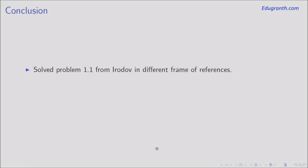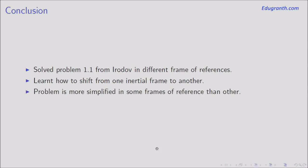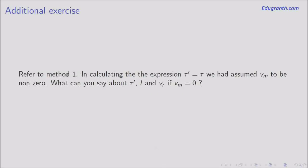As a conclusion, we have solved the first problem from Irodov. We learned how to shift from one reference frame to another and saw that in some frames the problem becomes easier — for example, in the raft frame the solution was very simple. I'll leave you with a small exercise: in method one, when we calculated tau prime equals tau, we assumed Vm to be non-zero. If Vm equals zero, what can you say about the values of tau prime, L, and Vr? Thank you, and see you next time. Bye.